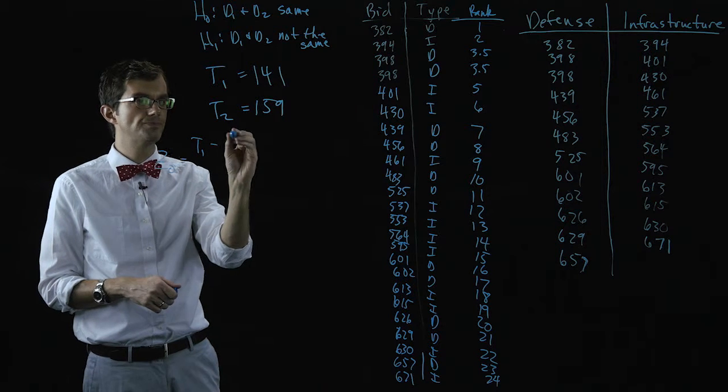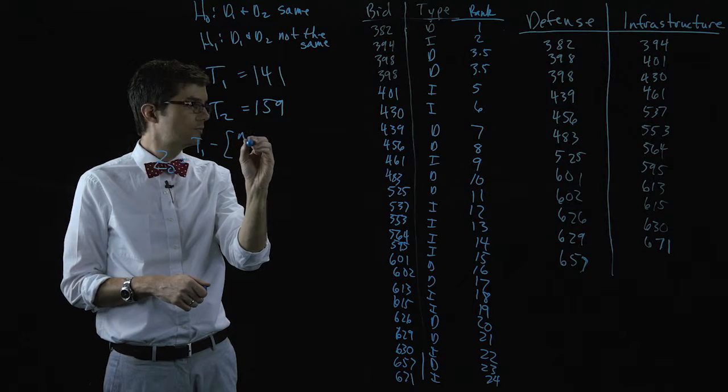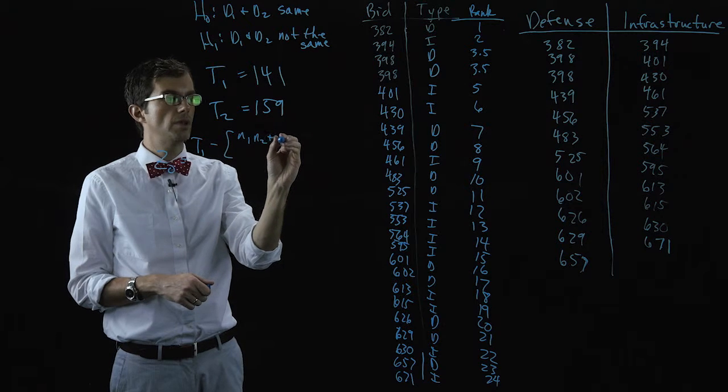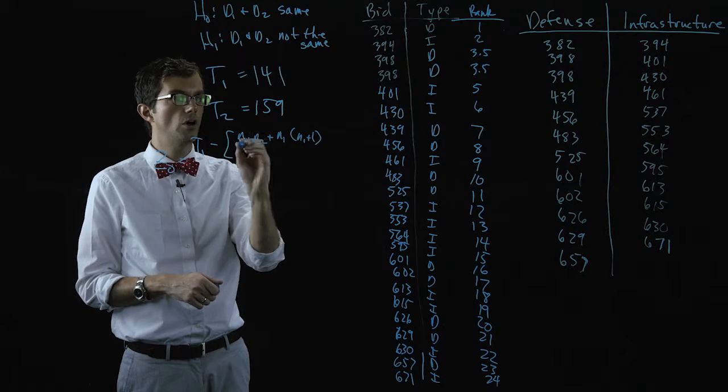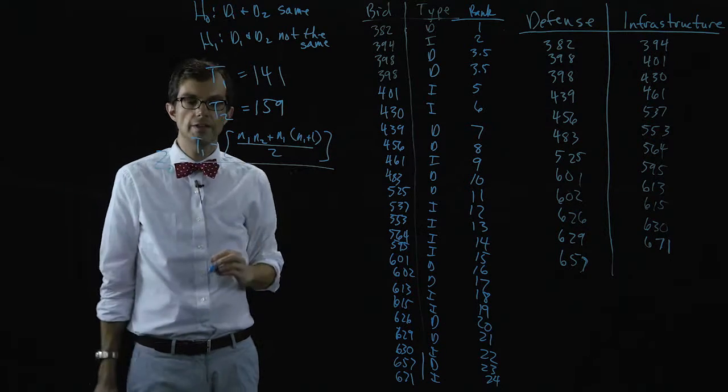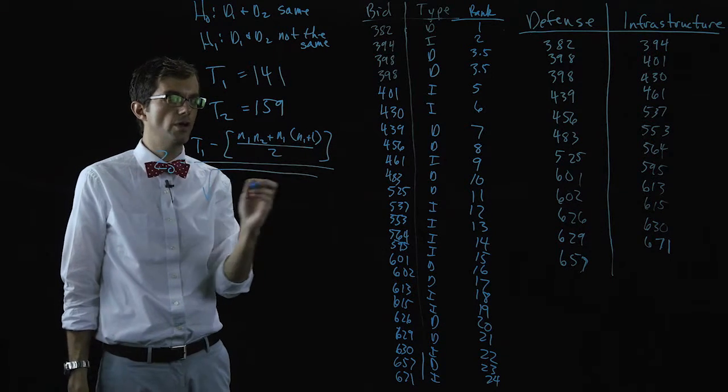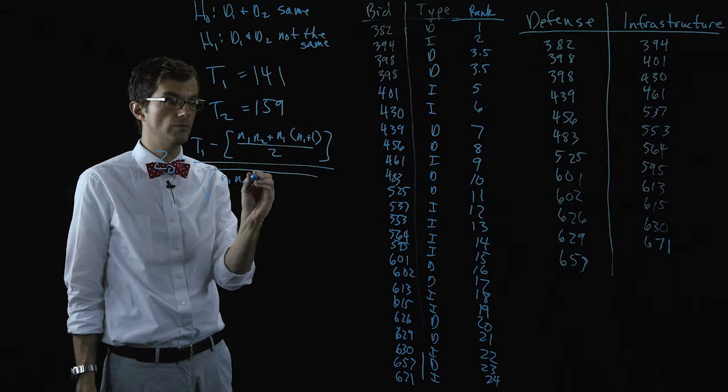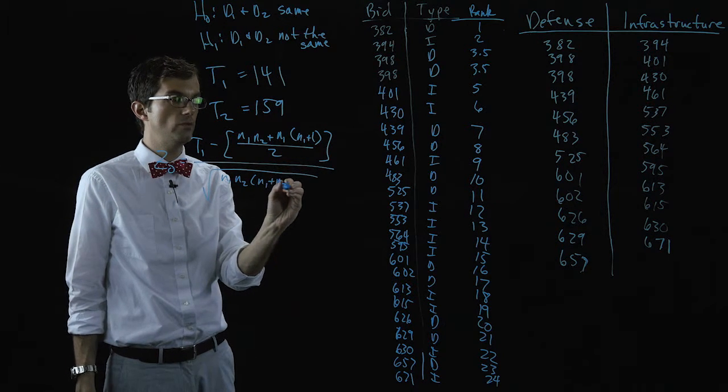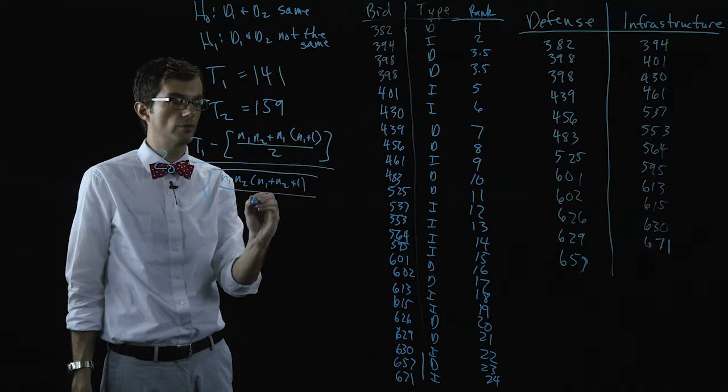It's d-one minus n-one times n-two plus n-one times n-one plus one all over two. And in the denominator we have the square root of n-one, n-one plus n-one plus n-two plus one all over twelve.